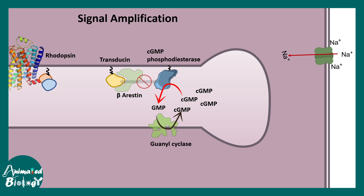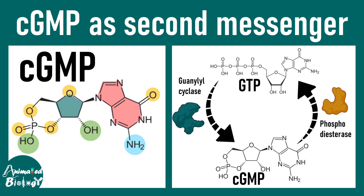In summary, cyclic GMP is involved in phototransduction and its levels determine whether a neuron depolarizes or hyperpolarizes. When cyclic GMP is high — as in darkness — neurons fire. When cyclic GMP is low — as in light — neurons do not fire, because the cyclic GMP-gated channels are inactive.